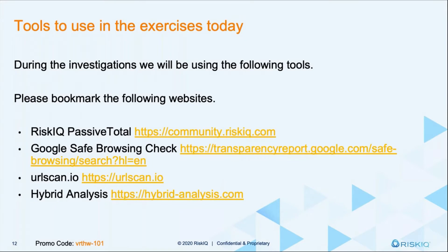These are some of the different tools that we're going to be leveraging today. Save all of these in your browser — they're in the chat right now. The applications we're going to be using are RiskIQ Passive Total, Google Safe Browsing Check to make sure a website's good or bad, URL Scan.io in case we want to look at an image, and Hybrid Analysis. One thing to remember: the system we're using is a live system, so we're going to be investigating real live attacks and real bad things. You don't want to go there directly — you want to keep a buffer between you and the threat. We're going to use tools that can go out and gather the data and bring it back to protect you and your organization.